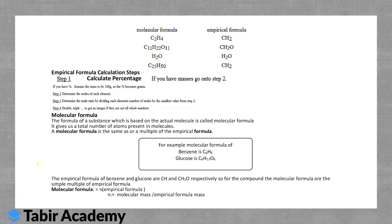The molecular formula is the formula of a substance based on the actual molecule — unlike the empirical formula, which is simplified. It gives the total number of atoms present in a molecule. For example, C₂H₄ means two carbon atoms and four hydrogen atoms. The molecular formula is the same as, or a whole-number multiple of, the empirical formula. For instance, benzene is C₆H₆ (empirical formula CH) and glucose is C₆H₁₂O₆ (empirical formula CH₂O). N = molecular mass / empirical formula mass.